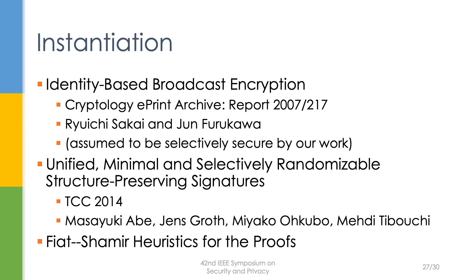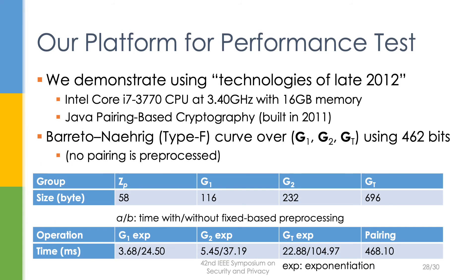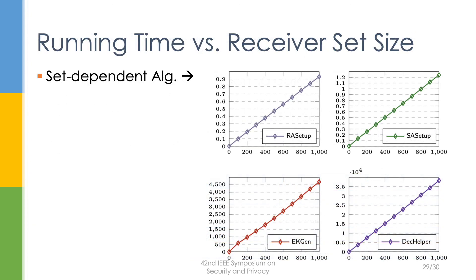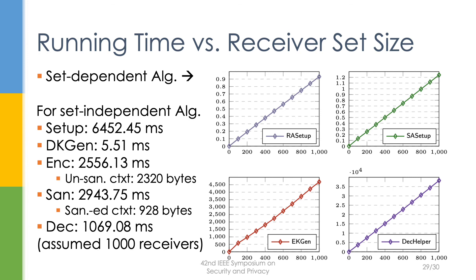Let's focus on our main instantiation. We used the Sakai-Furukawa IBE scheme, Abe et al.'s structure-preserving signatures, and Fiat-Shamir heuristic for the proof. To demonstrate efficiency, we used a somewhat old computer for performance testing. Our implementation used the PBC library and a 462-bit BN curve, and we didn't do any pre-processing in our prototype. Each pairing operation takes around half a second. Authority setup, encryption key generation, and a special helper function for decryption are all set-size dependent, so runtime increases linearly. All other algorithms are set-size independent, and all algorithms run in the order of seconds, even for a thousand receivers.